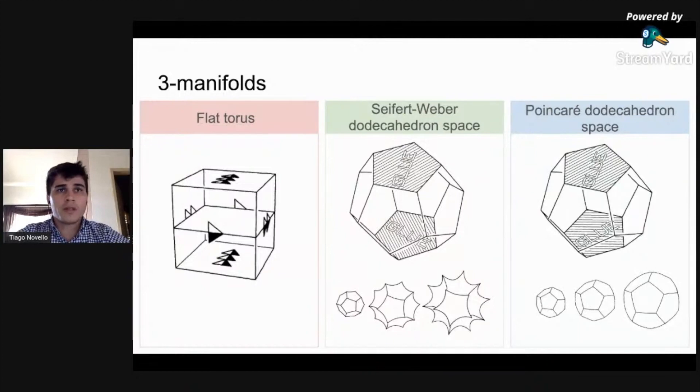For a compact hyperbolic 3-manifold, we identify each pair of opposite faces in a regular dodecahedron with an additional clockwise rotation of 3π/10. This is the Seifert-Weber dodecahedron space. The face pairing produces many identifications. For example, you can verify that the edges are grouped into six groups of five.